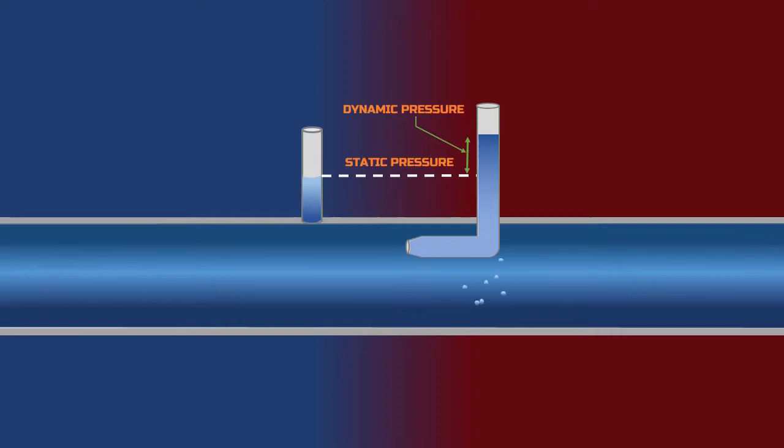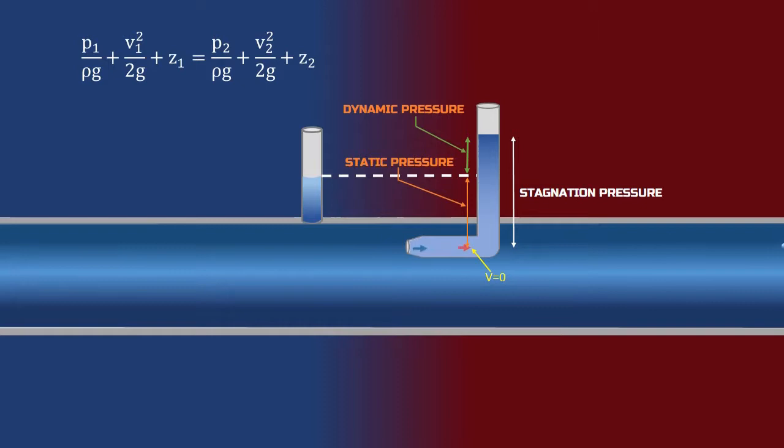When fluid enters the pitot tube, the velocity of the fluid particles becomes zero and it is converted into dynamic pressure. So we get the stagnation pressure, which is the sum of the static and dynamic pressure. Stagnation pressure represents the pressure at a point where the fluid velocity has come to a complete stop.